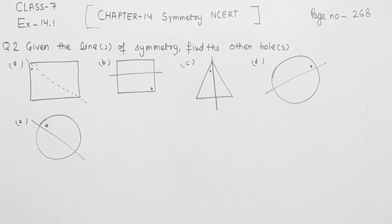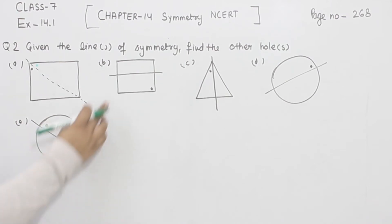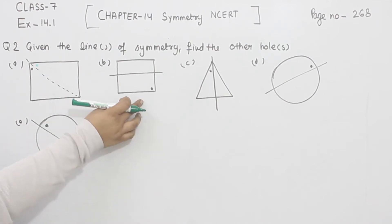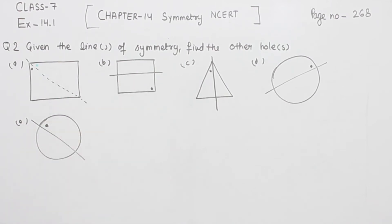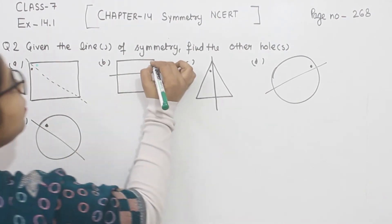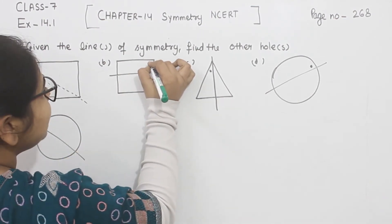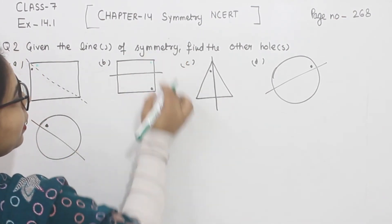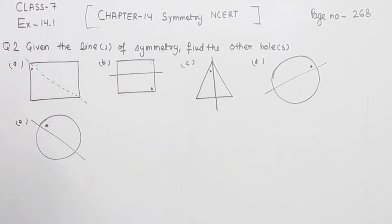Now comes part B. In part B, this is the line of symmetry and this is the hole we are having. The other hole will be on this side, so both the holes come on the surface of each other.